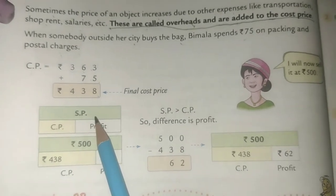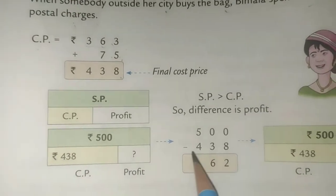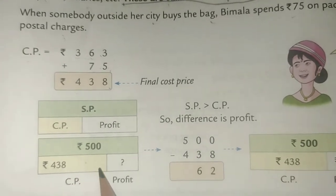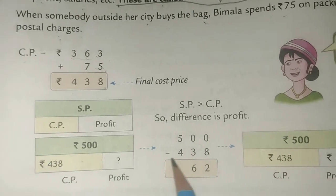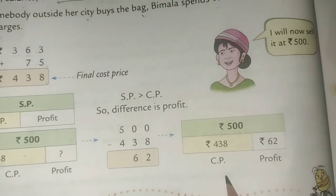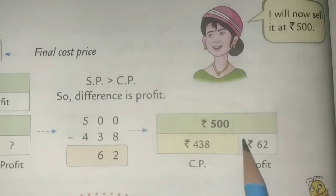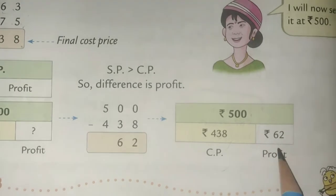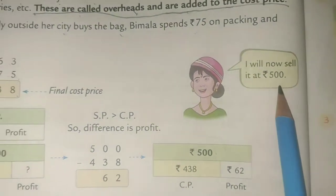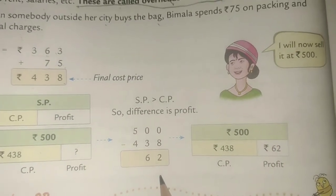She will sell this bag for Rs. 500, and the cost price is Rs. 438. So she will get a profit because the difference is Rs. 62. Selling price is Rs. 500, cost price is Rs. 438, and the difference is Rs. 62 — so she earned Rs. 62 profit.